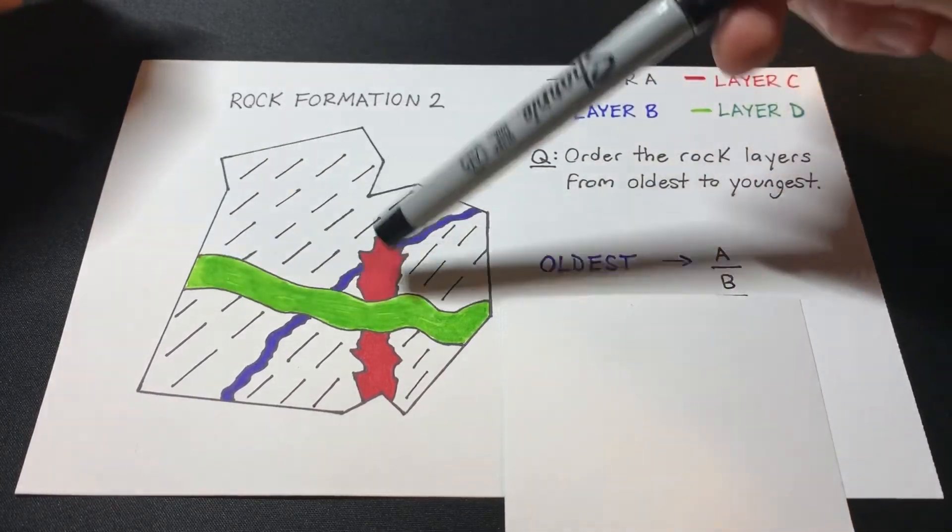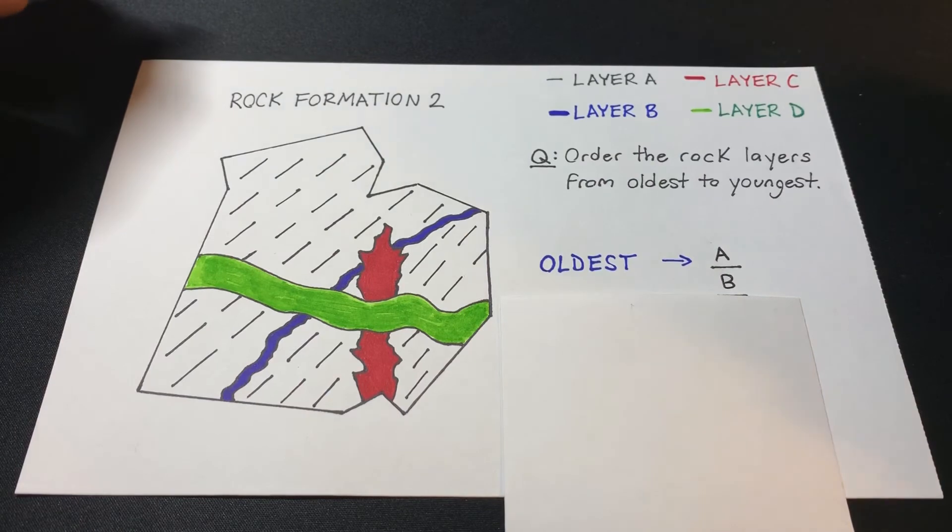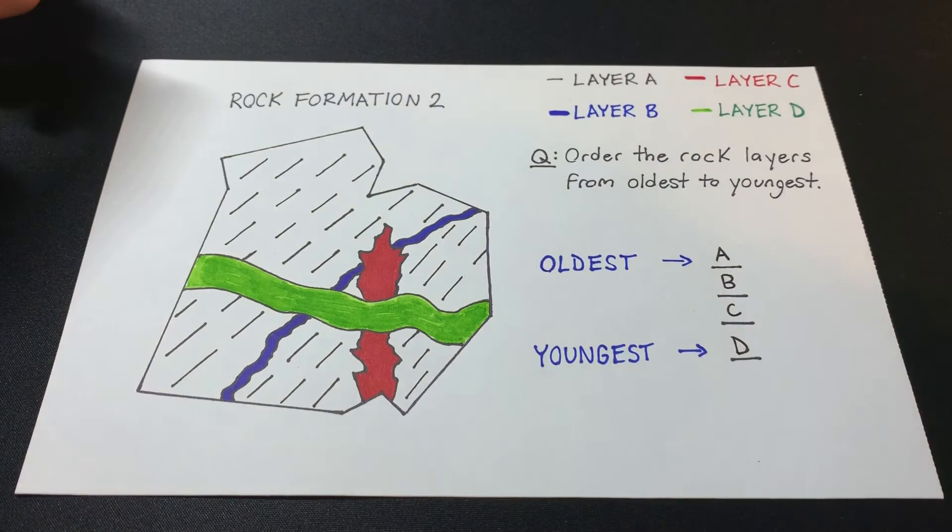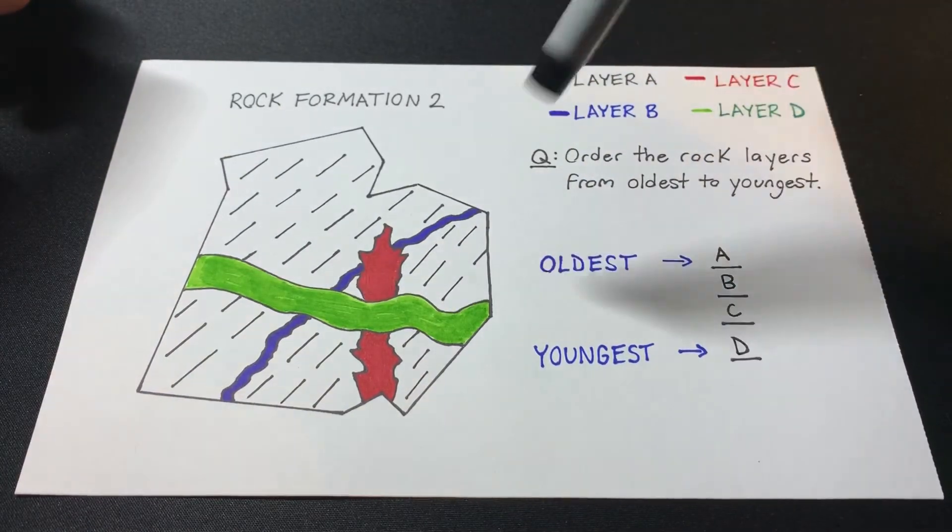But it is still being overlapped by layer D and that would make layer D the youngest by default, right? Because it's cutting across all three rock layers.